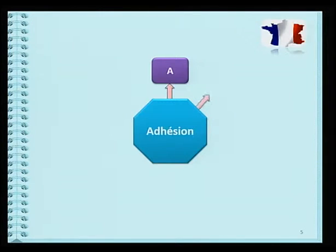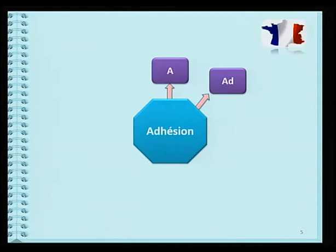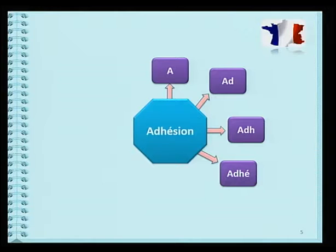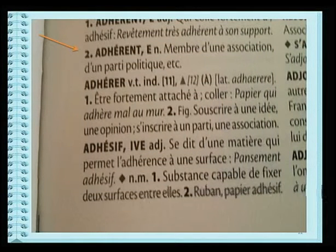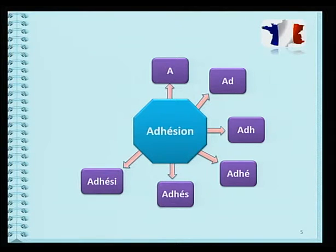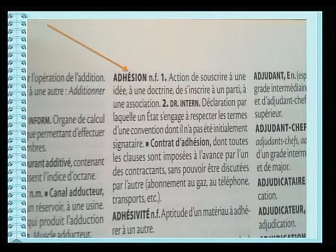Cherchons notre mot adhésion en commençant par A. Toujours pas suffisant. Utilisons la deuxième lettre qui est le D. Puis la troisième lettre, le H. Tu n'y es toujours pas. Continuons avec ce qui suit. Ajoutons-y le S. Nous y voilà. Adhésion.